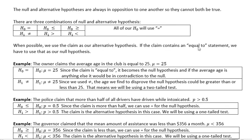There's really only three combinations of null and alternative hypotheses. If your null hypothesis is equal to, then the alternative is not equal to. If the null is less than or equal to, then the alternative is greater than. And if the null hypothesis is greater than equal to, then the alternative is less than. All of our H sub zero or null hypotheses will be using equal sign.